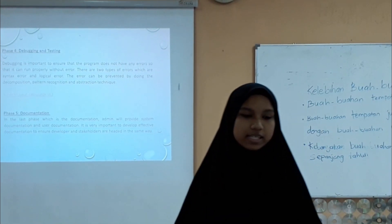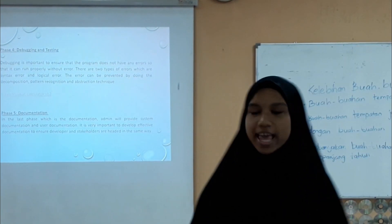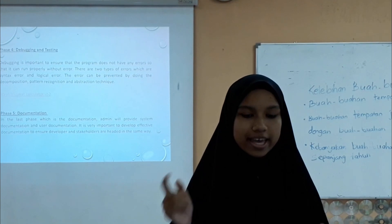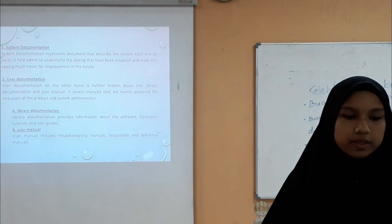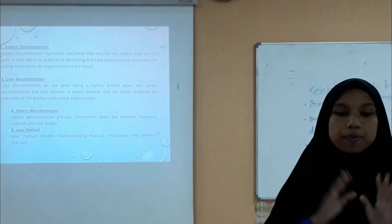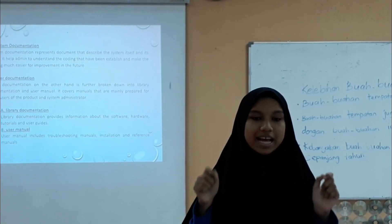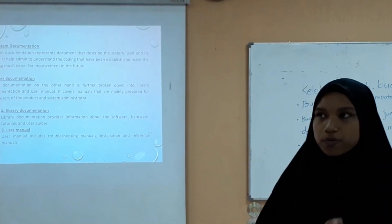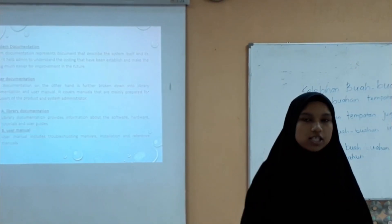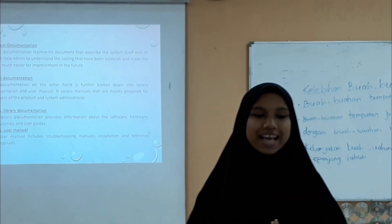The last phase is documentation. We provide system documentation and user documentation. It is very important to develop effective documentation to ensure developers and stakeholders are headed in the same direction. System documentation describes the system itself and its parts, helping to understand the coding and making it easier to improve in the future. User documentation is broken down into library documentation and user manual, mainly prepared for end users and system administrators.